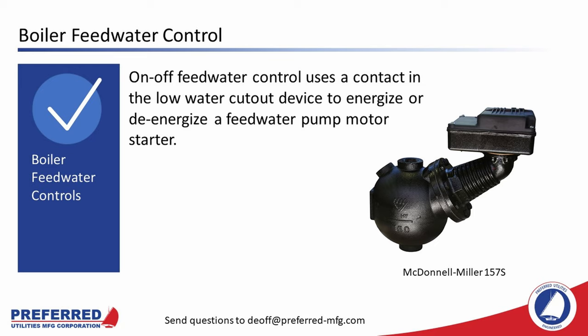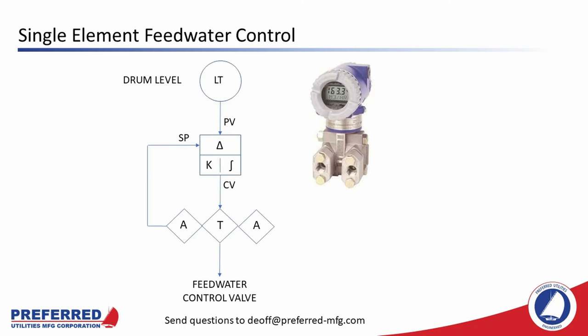On-off feedwater control uses a contact in the low-water cutout device to energize or de-energize a feedwater pump motor starter — the most common device being a McDonnell Miller 157S, with one switch to shut off the boiler on low water and another switch set slightly higher to toggle the feedwater pump on and off. Single-element drum level control uses a drum level signal — usually a 4 to 20 milliamp analog signal from a differential pressure transmitter mounted on the boiler. The controller will be a true PID controller, or on smaller boilers a proportional-only controller that sends a 4 to 20 milliamp output to a feedwater control valve. Preferred likes to use ball valves or characterized seat ball valves with a more linear characteristic. This system offers more precise drum level control than on-off control, plus auto-manual capability and the ability to change water level set points.